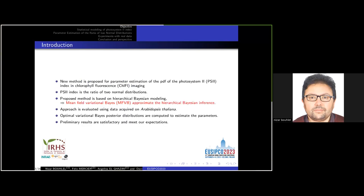In this study, we propose a new method for parameter estimation of the probability density function of the photosystem 2 PSI index in chlorophyll fluorescence imaging, where the PSI index is modeled as the ratio of two normal distributions. The proposed method is based on hierarchical Bayesian modeling, and the mean field variational Bayes is performed to approximate the hierarchical Bayesian inference. The approach is evaluated using data acquired on Arabidopsis thaliana.